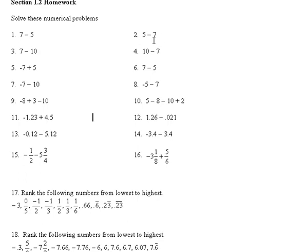5 minus 7 — you're subtracting off a larger number than what you have to start with, so the answer would be negative 2. Another way of looking at this is that the signs are different, because 5 minus 7 is the same as 5 plus a negative 7. If the signs are different, you subtract — so 7 minus 5 is 2 — but you take the sign of the dominant number, which is the larger number. The larger number is 7, and since its absolute value is larger and its sign is negative, we'd have negative 2. It's easier just to think about it as: if the temperature is 5 and it goes down 7 degrees, we're at negative 2.